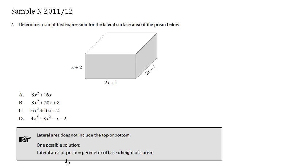So we have this very cool technique here. The lateral area of a prism, this rectangular prism, this box, is equal to the perimeter of the base times the height of the prism. We have the height here, x plus 2.